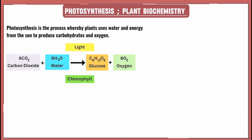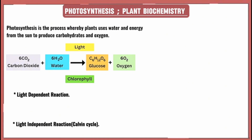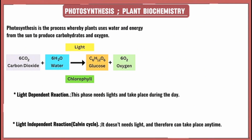Now we are going to go into detail about what photosynthesis is. Photosynthesis takes place in two phases: one, the light-dependent reaction, and two, the light-independent reaction, which is also known as the Calvin cycle. The light-dependent reaction needs light and takes place during the day, while the light-independent reaction doesn't need light and can take place anytime.